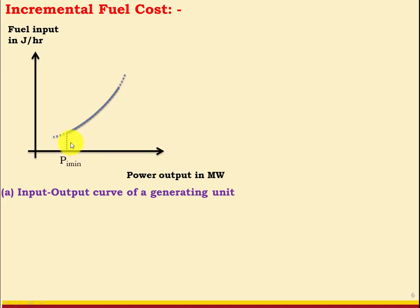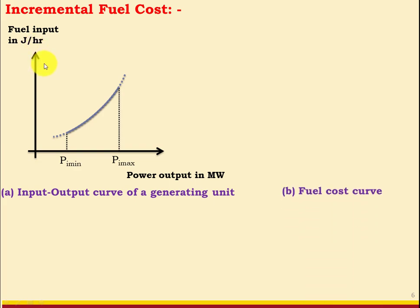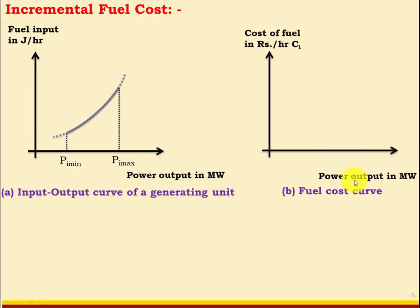There is a constraint that actual generation should be more than or equal to Pi_min and less than or equal to Pi_max. On the x-axis we have power output in MW and on the y-axis fuel input in joules per hour, but we want actual cost. So we convert the y-axis from fuel input in joules per hour to cost of fuel in rupees per hour. Re-plotting: x-axis is power output in MW and y-axis is cost of fuel in rupees per hour — this cost we want to minimize.